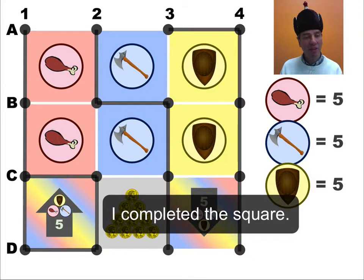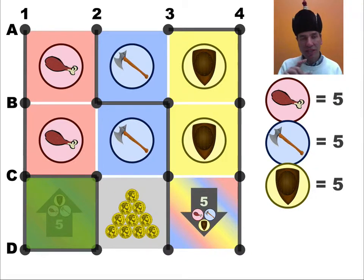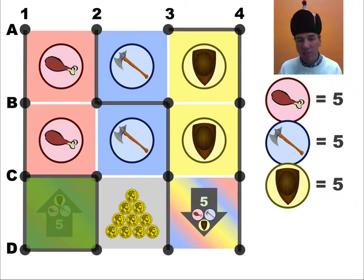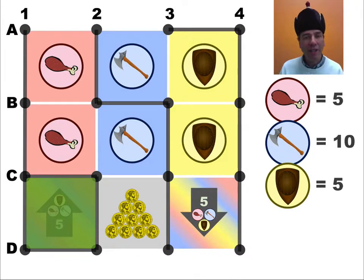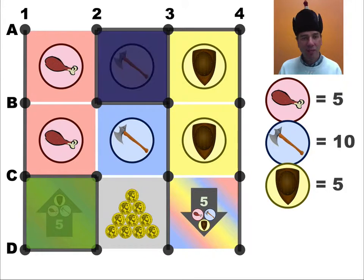For example, here I'm going to do this — and I'm going to claim that. That is claimed by me. What does that mean? The five arrow pointing up means that I get to increase the value by five doubloons of any one of those objects: the drumstick, the axe, or the shield. So I'm going to increase the axe. Once you complete a box, you get to take another turn. They've completed that box, so they get an axe now — that's worth 10 for them at the end of the game.